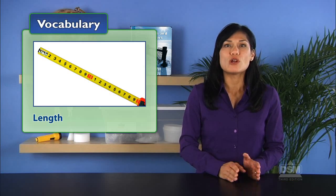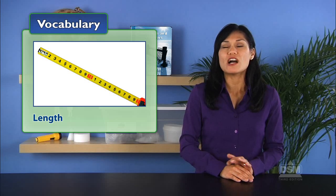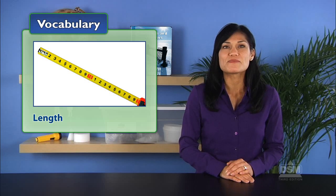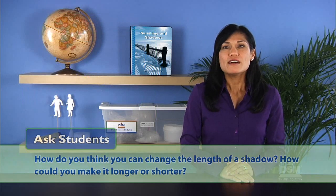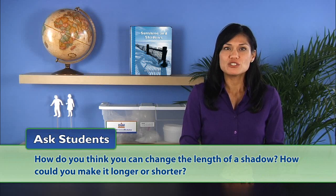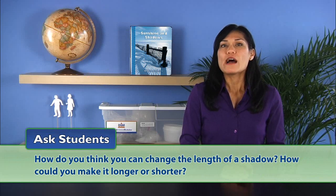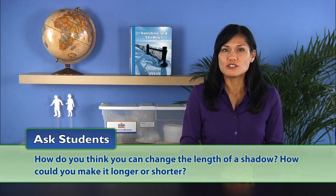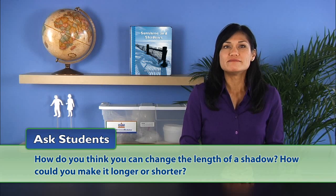Explain to the class that when we talk about an object's length, we mean how long or short the object is. Ask students: how do you think you can change the length of a shadow? How could you make it longer or shorter? Accept all reasonable suggestions.